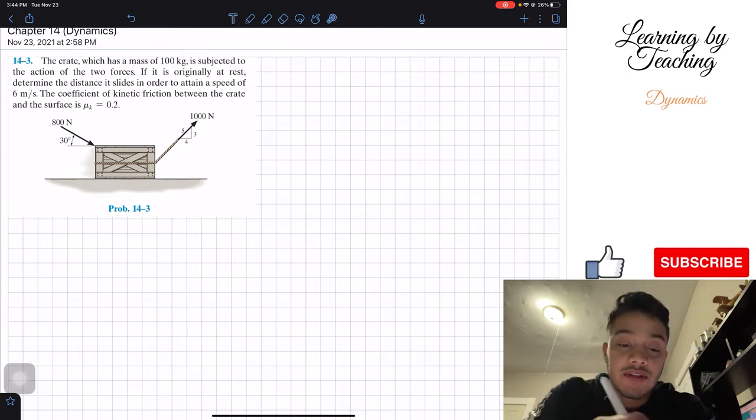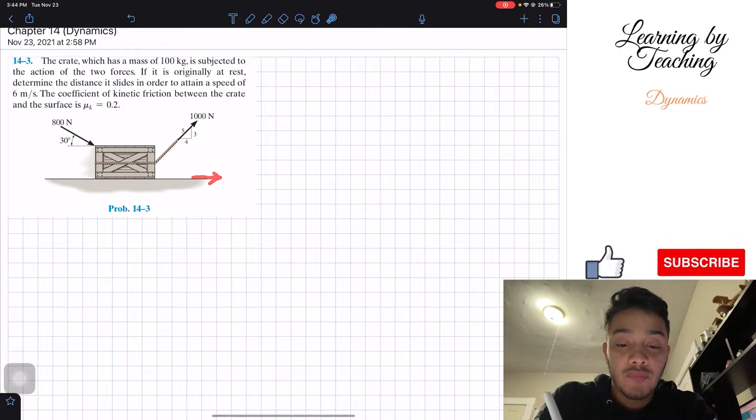So what we can see here is that we got a crate, we got these two forces that are pushing my crate, and we are obviously assuming by the direction of the forces that we're going to slide to the right. So since it says it slides, that means that we're not moving in the vertical up, neither down.